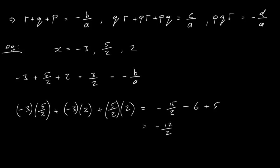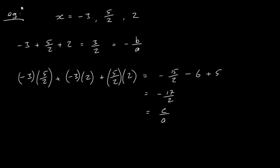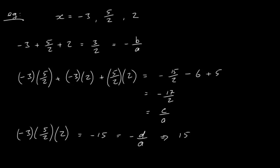Finally, multiplying all three roots: minus three times five over two times two equals minus fifteen. Since this equals minus d over a, we get that fifteen equals d over a.